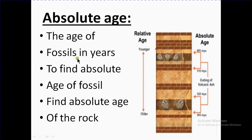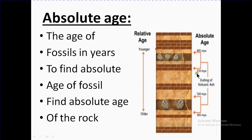Absolute Age: to find the absolute age, we determine the age of the fossil in rock layers in actual years. In relative age, we only know young and old — there is no actual time period mentioned. But in absolute age, we know the specific time period; for example, 595 to 510 million years for one section, 510 to 520 for another layer, and 520 to 525 for the next. So absolute age gives us the age of soil and rock in years.